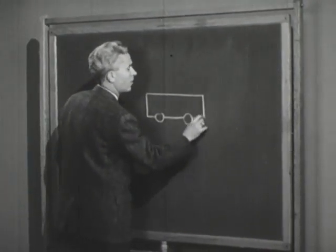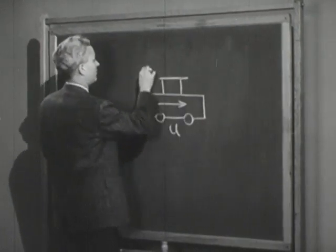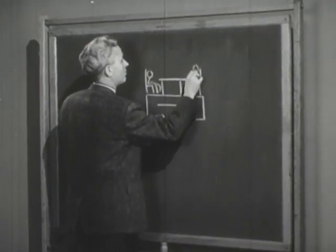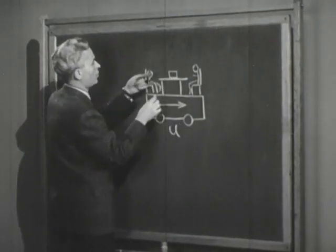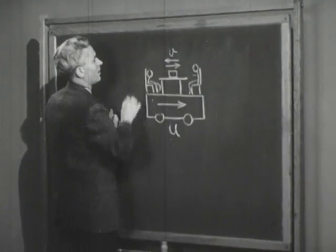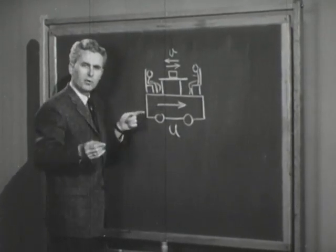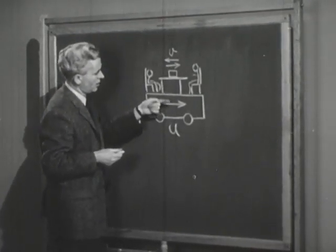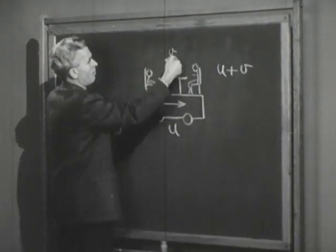Here is the cart which was moving along in this direction with the velocity U. We were sitting on the cart at a table. When I pushed the puck, it went in this direction with a velocity V, and when Dr. Hume pushed it, it went in this direction with the same velocity V. But this is the velocity relative to the cart. What about the velocity relative to an observer on the ground in the fixed frame? Well, if it was pushed in this direction, its velocity is U plus V. If it's in this direction, its velocity is U minus V.